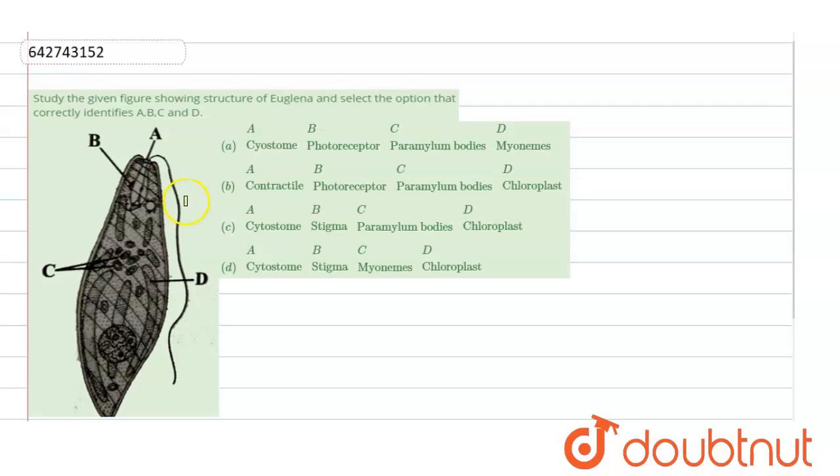Hello students, let's start with the question. The question here states study the given figure showing the structure of Euglena and select the option that correctly identifies A, B, C and D.